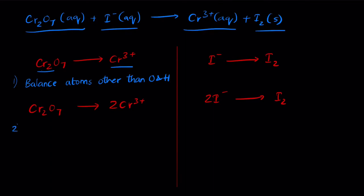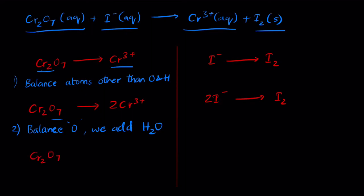Next, balance oxygen by adding H₂O. There are seven oxygens in Cr₂O₇²⁻, so add 7H₂O to the right side: Cr₂O₇²⁻ → 2Cr³⁺ + 7H₂O. The iodine half-reaction has no oxygen, so it remains: 2I⁻ → I₂.